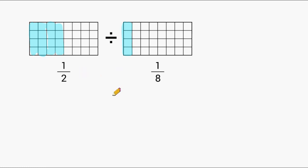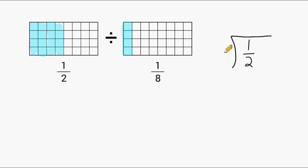The problem is asking us to divide 1 half by 1 eighth. The first number to be divided is called our dividend — the dividend is the total that we start with. And we are dividing it by a divisor of 1 eighth. In the past, you've probably heard teachers say: how many times does this number fit inside this number? We're going to see how many groups of 1 eighth it takes to make 1 half.